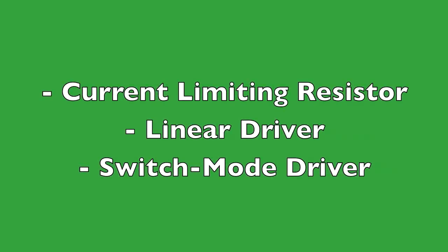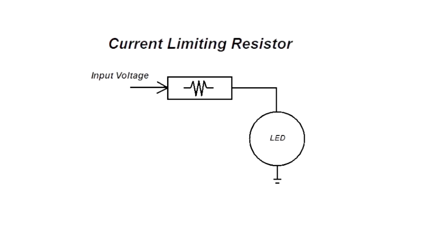So to recap, you may run across one or three different types of drivers. The simplest driver is simply a current limiting resistor. This is voltage dependent. So if we have any change in voltage, we will have a change in current. For this reason, and because large wattage resistors waste energy, this method is only used in very low powered LEDs, such as LED strips.